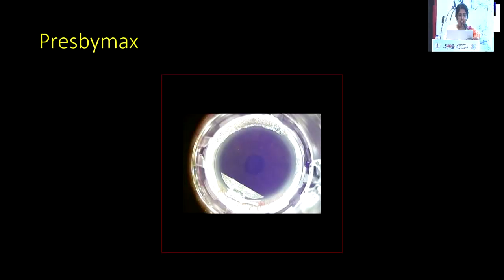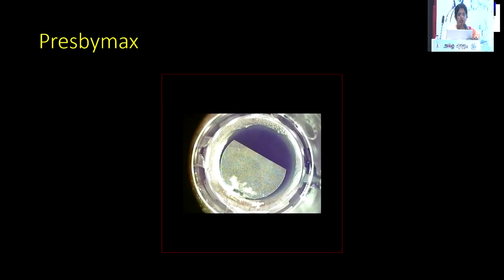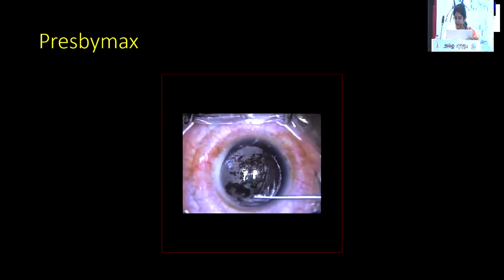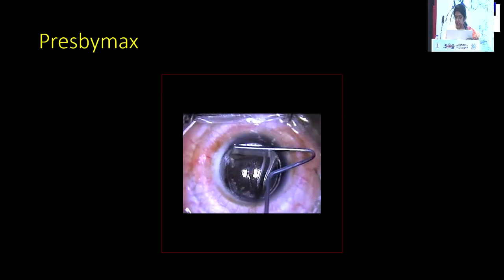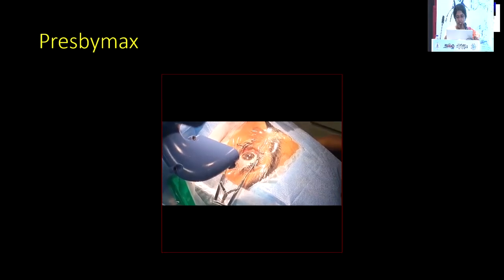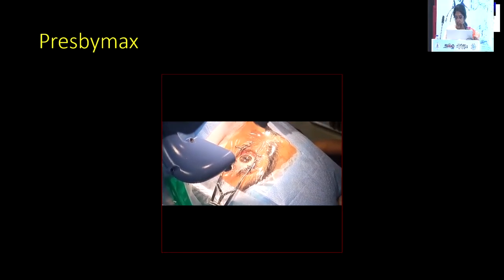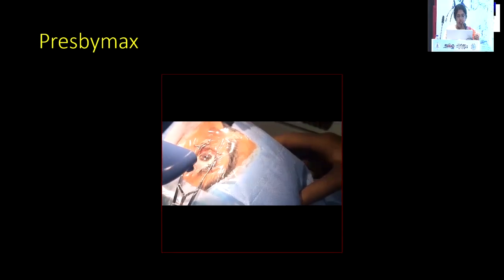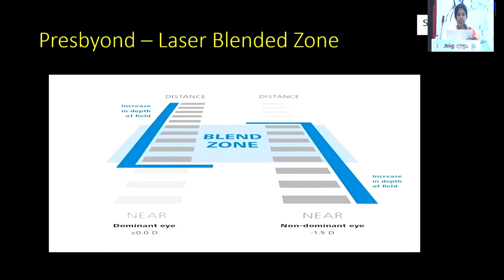Coming to the laser vision correction options: PresbyMAX is a standard laser correction procedure where we create a flap and give the laser correction. The next option is PresbyOn, a laser blended vision approach where we use the concept of micro-monovision — the dominant eye is corrected for distance and the non-dominant eye is corrected for near vision.